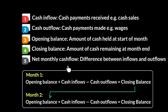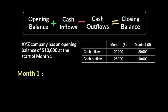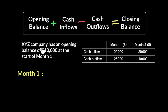Now let's attempt a question using this formula. Here's a company XYZ and the situation is given about their cash flow forecast. XYZ company has an opening balance of $10,000 at the start of month one, and we want to calculate what the closing balance of month two is. Between the opening balance of month one and the closing balance of month two, these four transactions have taken place: for month one, a cash inflow of $20,000 and an outflow of $25,000; and for month two, an inflow of $20,000 and an outflow of $10,000.